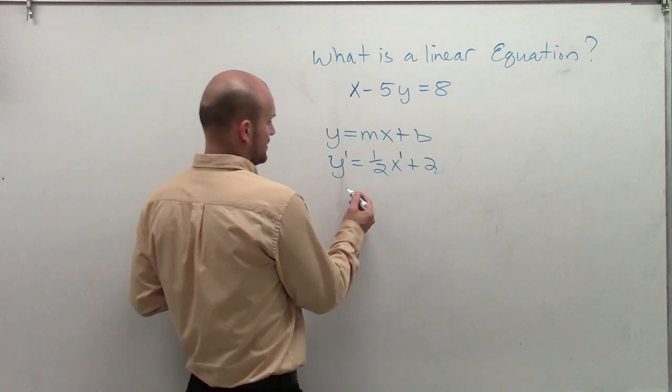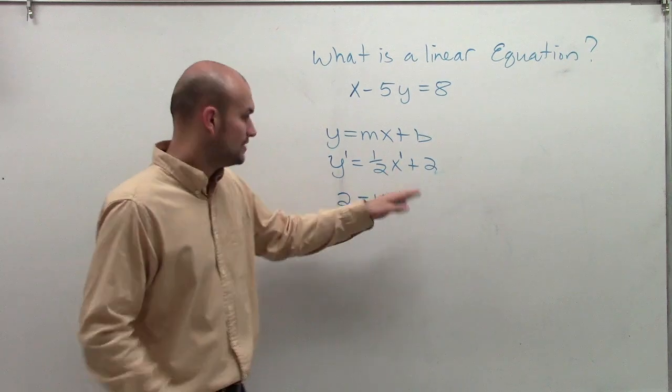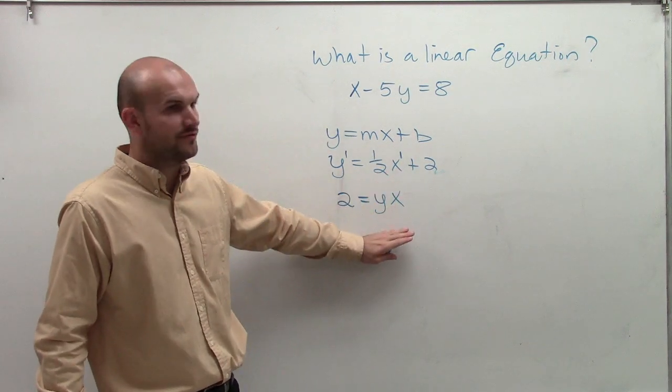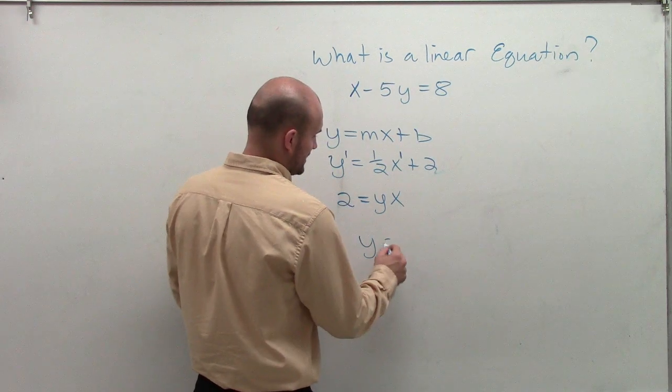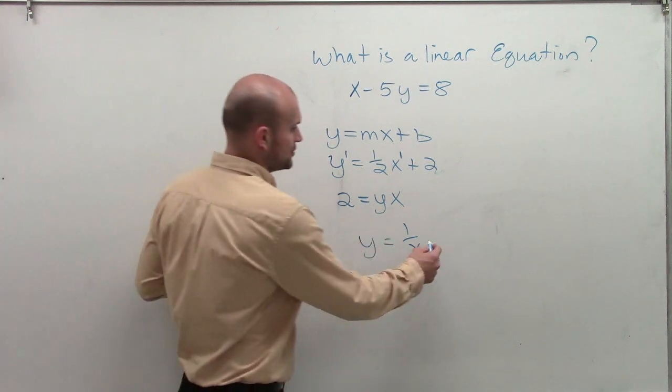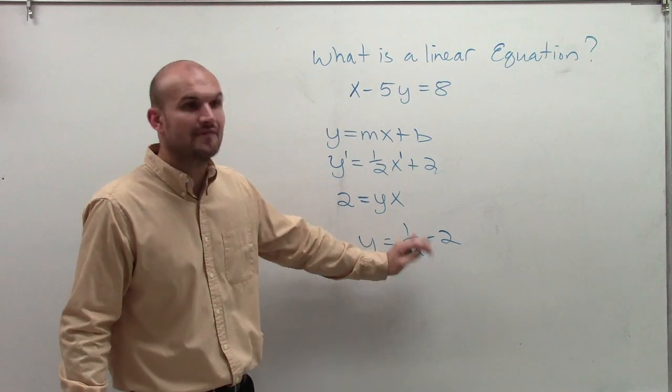However, if you have like 2 equals yx, even though these are both to the first power, you cannot have your variables multiply each other, nor can you have y equals 1 over x in your denominator. So you cannot have your variables being multiplied by each other, nor can you have them in the denominator.